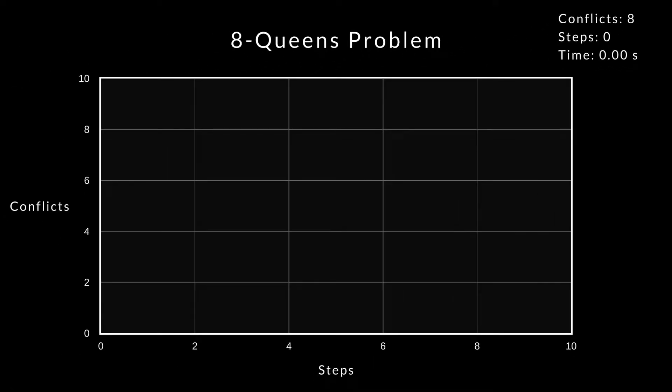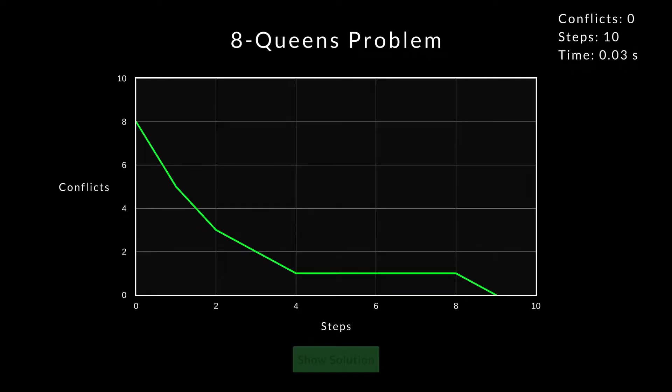Okay, here we go. That was super fast. From the plot, we can see that it was easy to reduce the conflicts in the beginning, but towards the end, we had some non-improving steps before we found a state with zero conflicts.